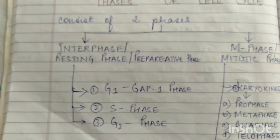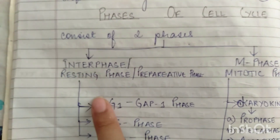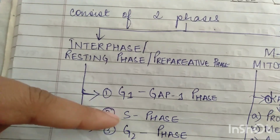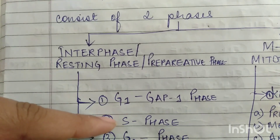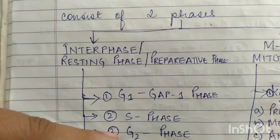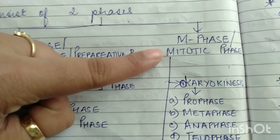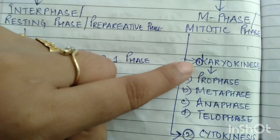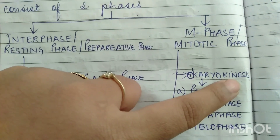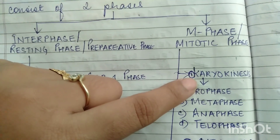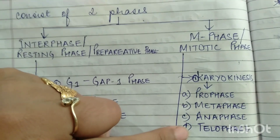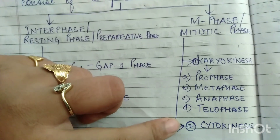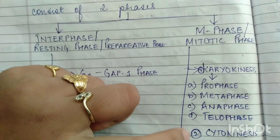The cell cycle consists of two main phases: interphase, which we also call resting phase or preparative phase, and M phase, which we call mitotic phase. Interphase is again divided into sub-stages G1, S, and G2. G1 is called gap 1 phase, S phase is called synthetic phase, and G2 is called gap 2 phase. M phase consists of two stages: karyokinesis and cytokinesis. Karyokinesis comes from karyon (nucleus) plus kinesis (splitting) — it is the splitting of the nucleus, studied under prophase, metaphase, anaphase, and telophase. Cytokinesis means splitting of the cell.